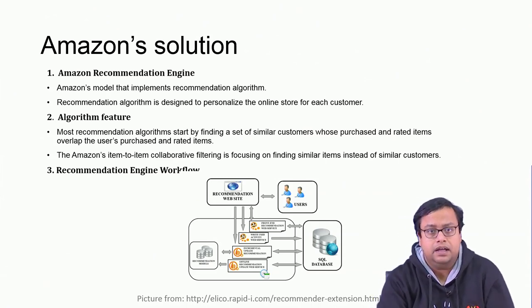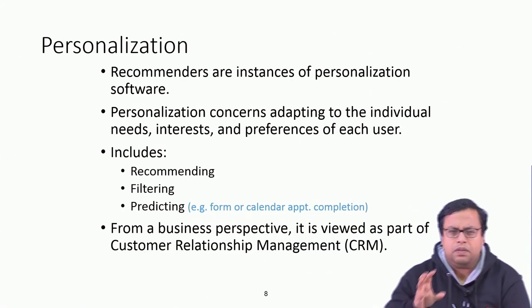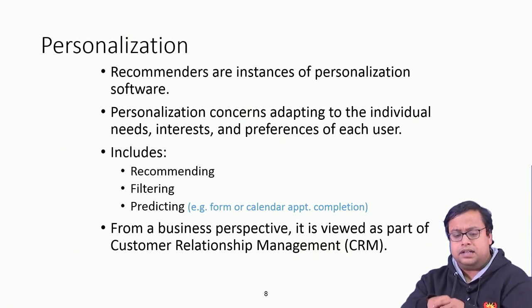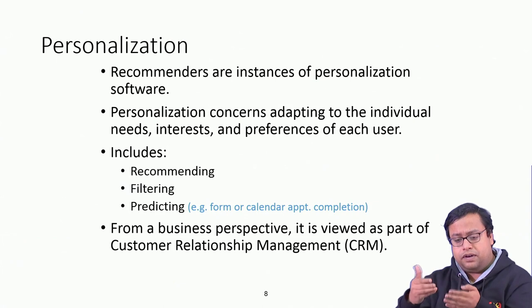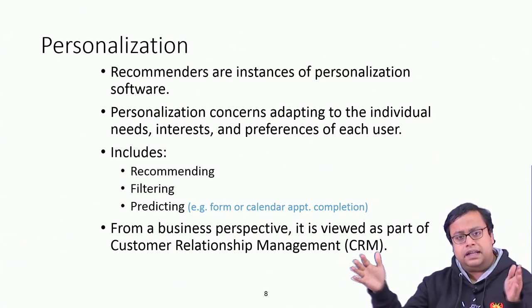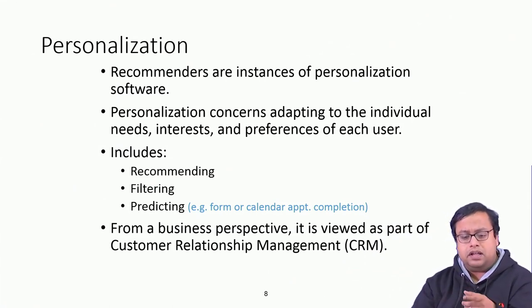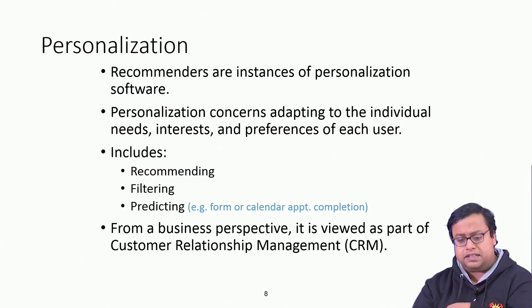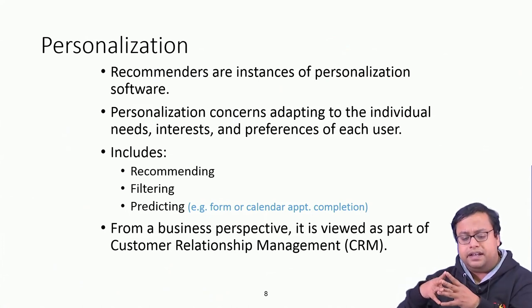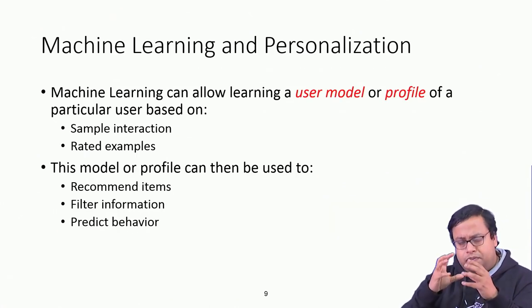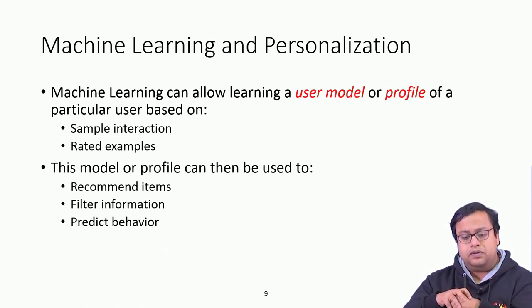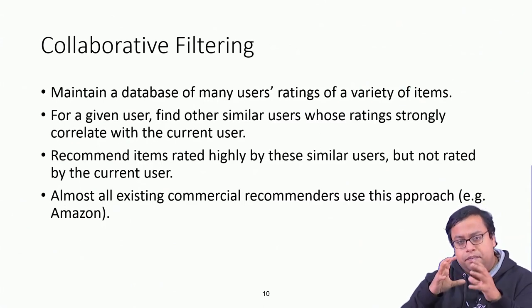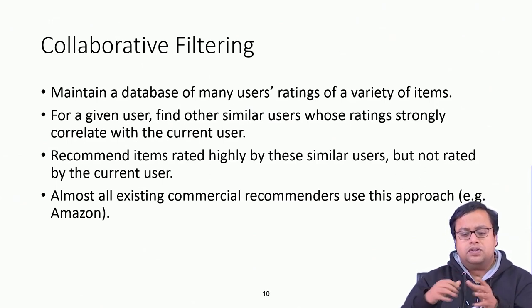The major focus is personalization. Recommendations are instances of personalization software. Personalization concerns adapting to the individual needs, interests, and preferences of each user. Some areas include recommending, filtering, or predicting. In the broad domain of marketing it comes under CRM, and machine learning can learn a user model or profile that is then used to recommend items, filter information, or predict customer behavior.